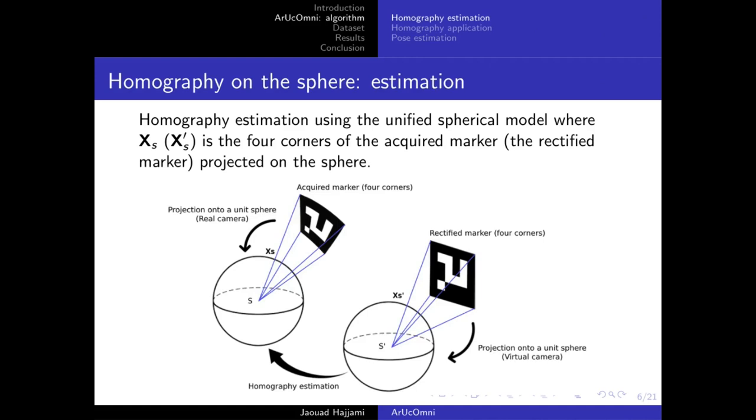The first thing is homography estimation. We have the rectified marker containing the canonical form with its own intrinsic parameters, which we call the virtual camera. On the other hand, we've got the acquired marker detected on the image. The goal is to estimate the homography that maps one image to another. For that, we project the four corners of both the acquired marker and its rectified version onto the sphere using the unified central projection, then the homography is estimated to map the spherical coordinates of the rectified marker to the acquired marker.